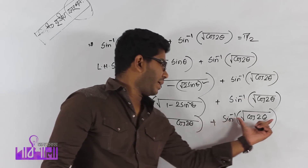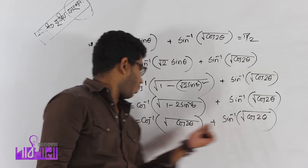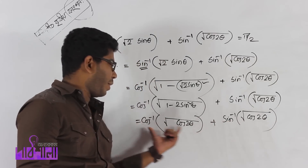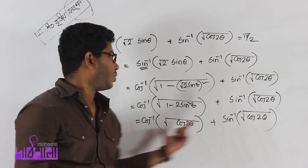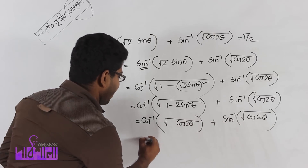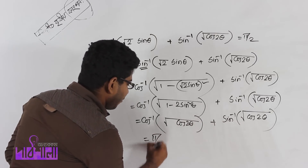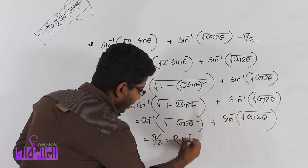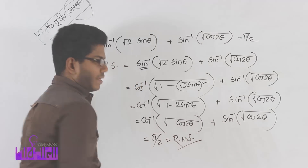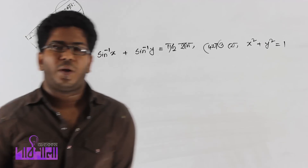We place it as: root over cos 2 theta — cos inverse of root over cos 2 theta. Notice what comes for sin inverse and what comes for cos inverse. The sum of both of these equals pi by 2. Using this formula, we learned earlier that this equals the right hand side.